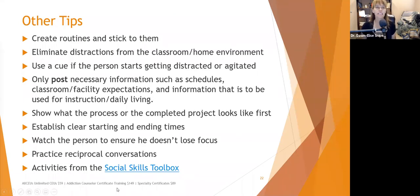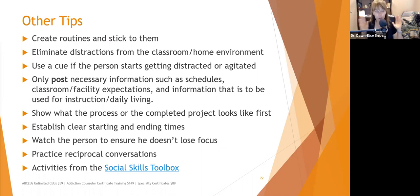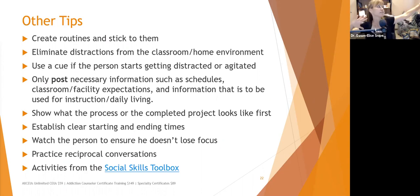Create routines and stick to them — changes in routines are one of the biggest causes of agitation in people with cognitive impairment. Eliminate distractions from their home environment or wherever they are. If the person starts getting distracted or agitated, use a cue to help them focus back on you. Distraction or agitation often means they feel out of control. Only post necessary information — schedules, classroom expectations, daily living information — so they can figure out what to focus on rather than being overwhelmed by excess material.